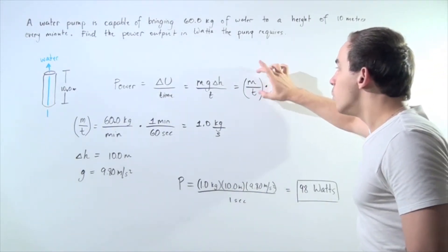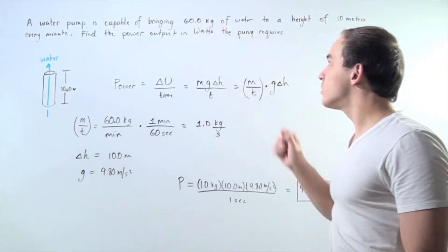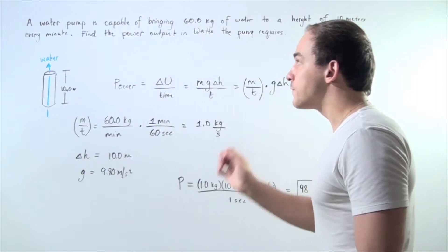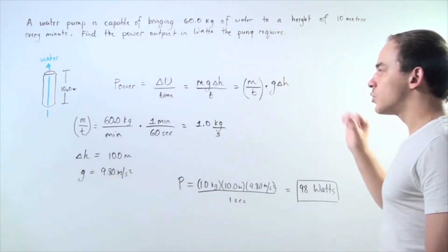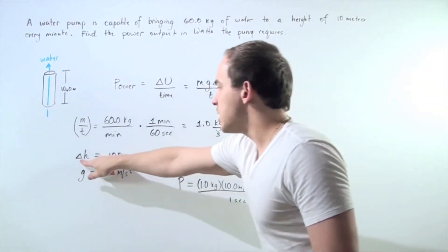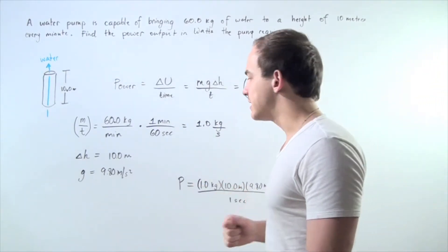We know what the mass per minute is. We know that 60 kilograms is pumped every single minute. If we convert that to kilograms per second, we can use this equation because we know what the change in h is. The change in h is simply 10 meters and we know what g is. That's simply our constant.